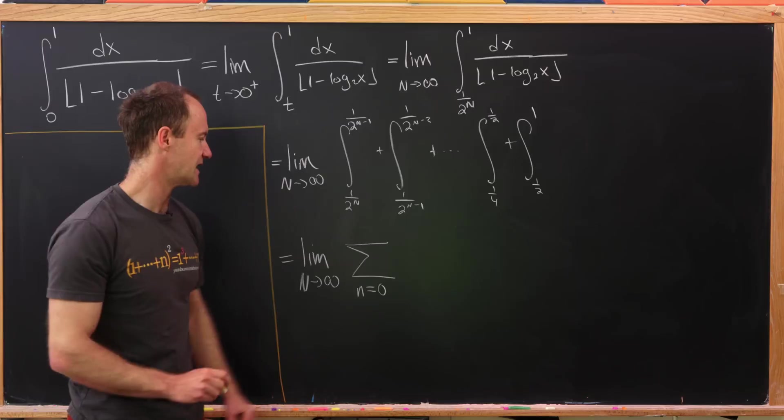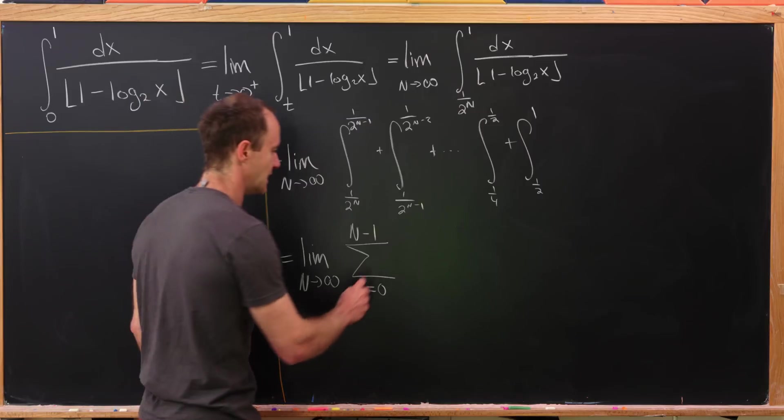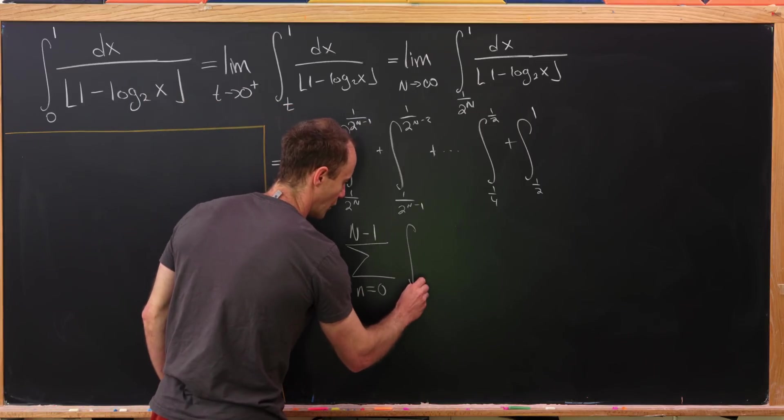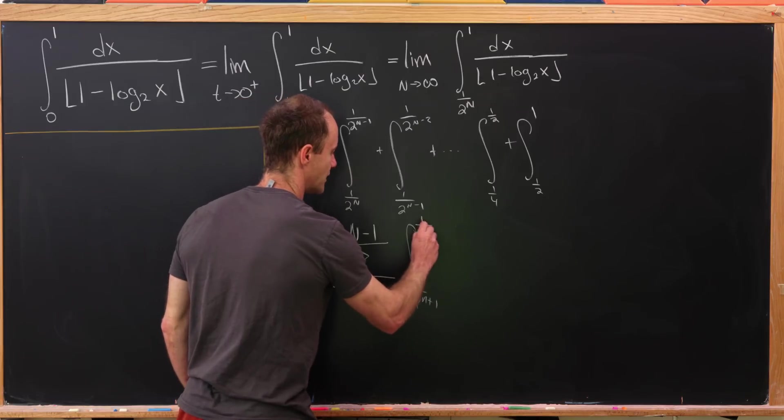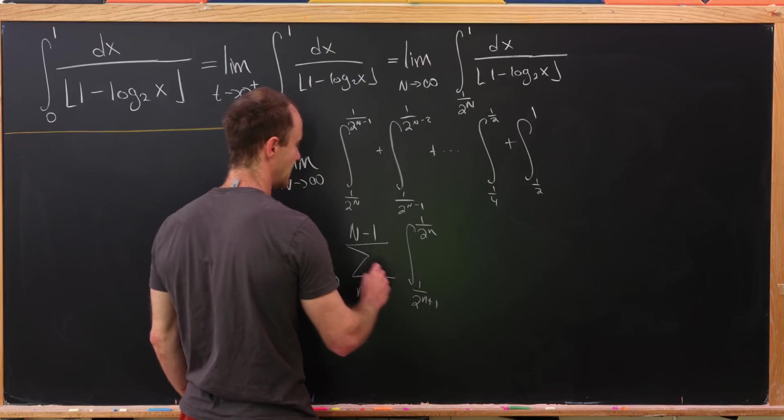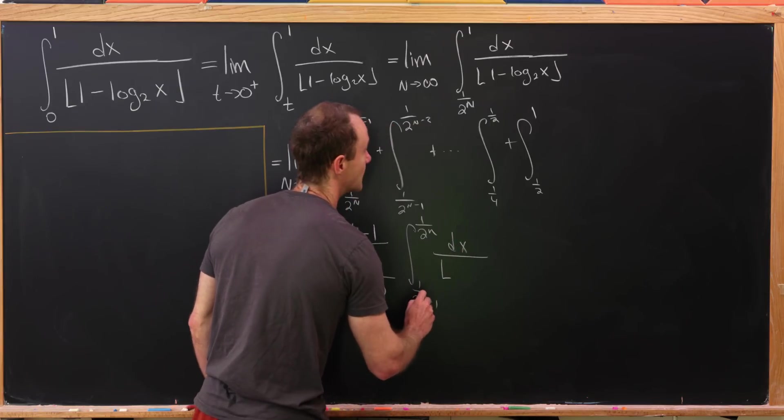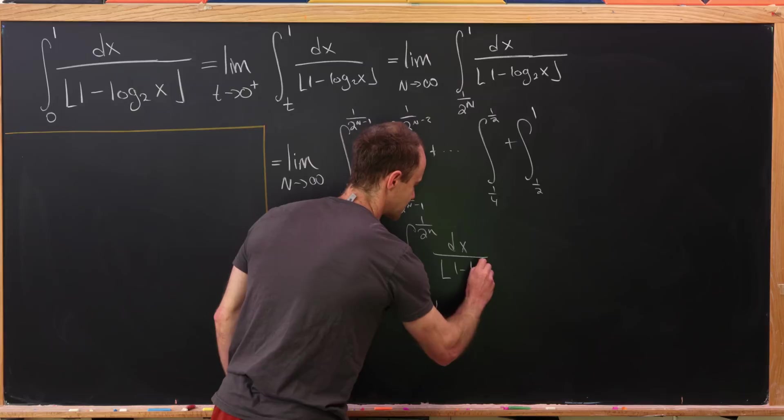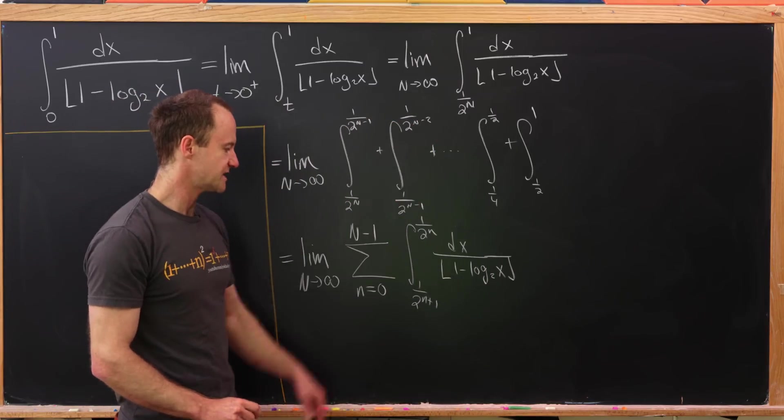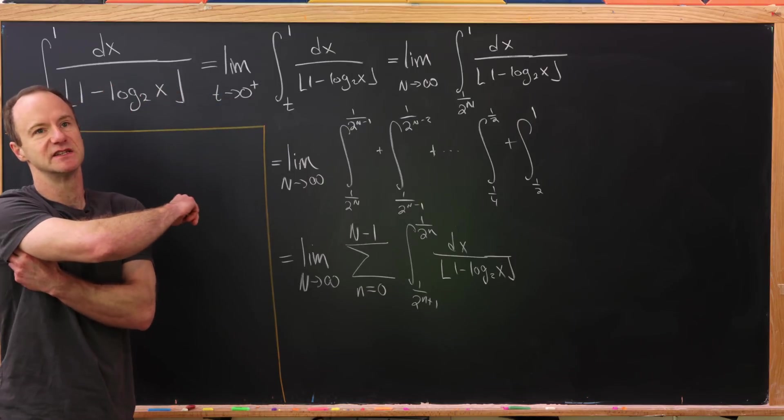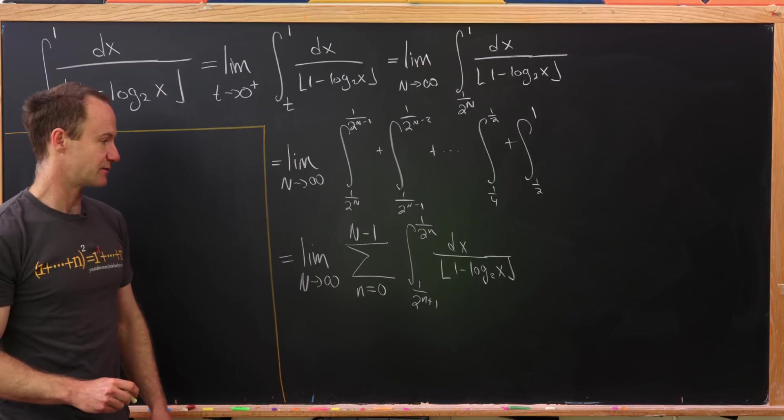And then this will be the integral from 1 over 2 to the n plus 1 to 1 over 2 to the n of our function. So dx over the floor of 1 minus log base 2 of x. But now the whole reason we split this up into pieces based off of powers of 2 is so we could do some simplification.